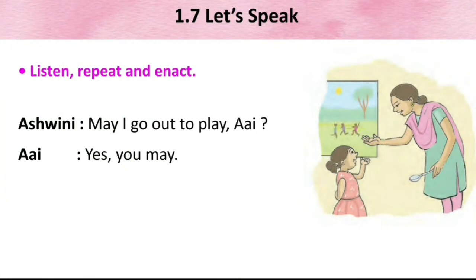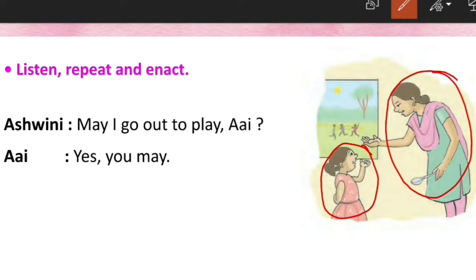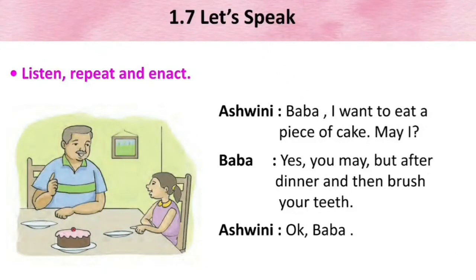Listen, repeat and enact. This is the conversation between Ashwini and her mother. Ashwini says: 'May I go out to play?' Her mother says: 'Yes, you may.' Ashwini asked her mother for permission to go out to play, and her mother said yes you may.